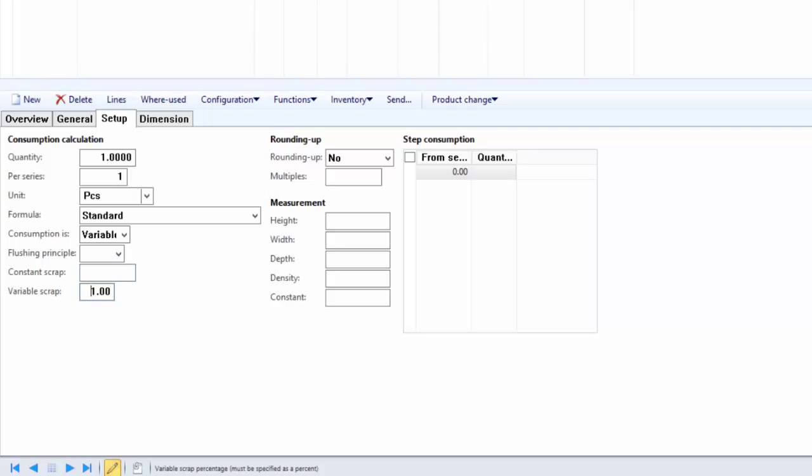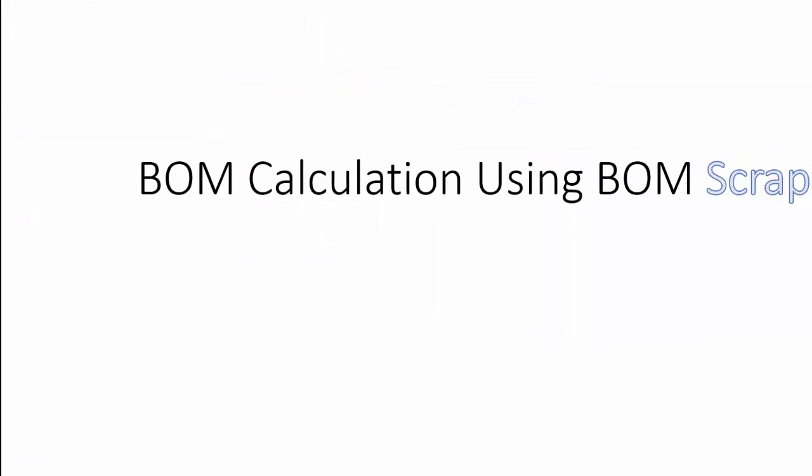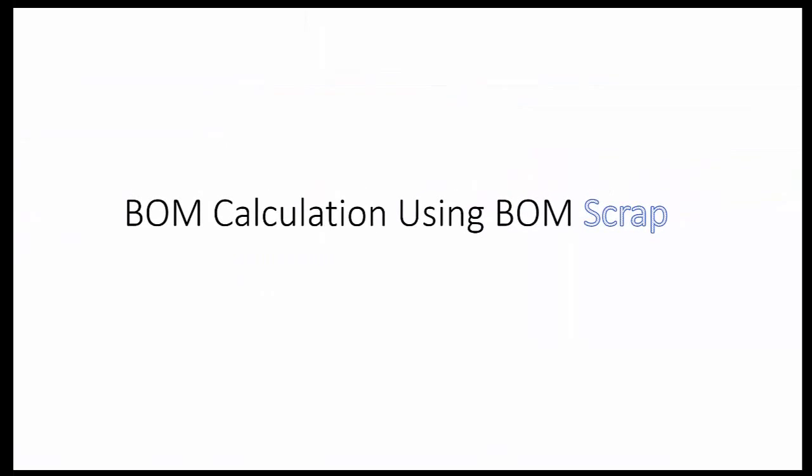This is how we can specify the constant and variable scrap for each BOM line. If BOM scrap — either constant or variable — is specified on the BOM line, then it will have an impact on the cost price calculated using the BOM calculation functionality. Microsoft Dynamics AX 2012 automatically takes the cost of any scrap into account when BOM calculations are made. Scrap can also be defined on the operations of the route of the product; according to the percentage of scrap of the operations, the scrap is calculated throughout the route and will also affect the cost of the BOM. For more information about calculation of scrap in routes, refer to the Microsoft Dynamics AX 2012 discrete manufacturing basics manuals.